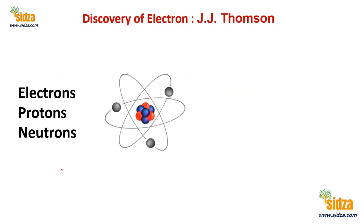Electron was first discovered by J.J. Thomson. Today we know that an atom consists of three main subatomic particles: electrons, protons and neutrons. Protons and neutrons are present inside the nucleus, and electrons are revolving around the nucleus.